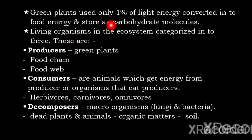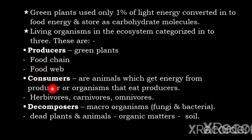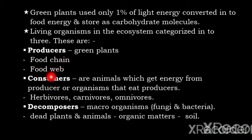Green plants use only one percent of light energy, which is converted into food energy and stored as carbohydrate molecules. Living organisms in an ecosystem are categorized into three groups: producers, consumers, and decomposers. Producers are green plants — they are the source of food and the starting point for food chains and food webs. Consumers are animals which get energy from producers, or organisms that eat producers.